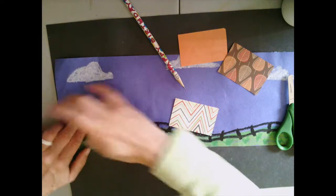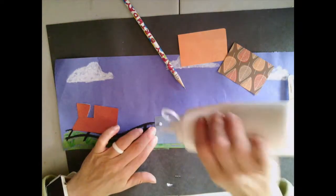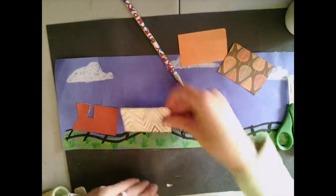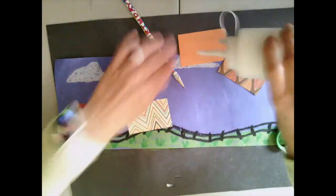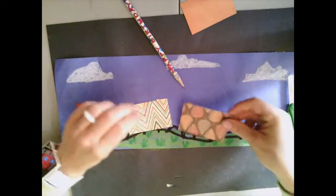Now that I've got the beginning part of my engine for my car, I'm going to take the other pieces of paper and add that on for the cars that the train is carrying. When you look at your paper, you might have different patterns.